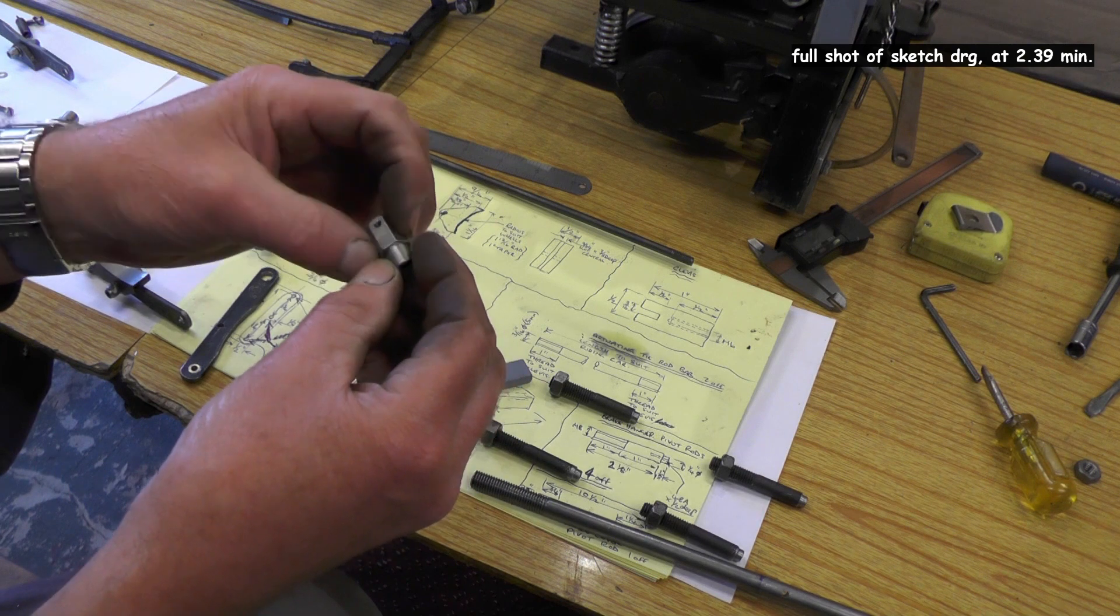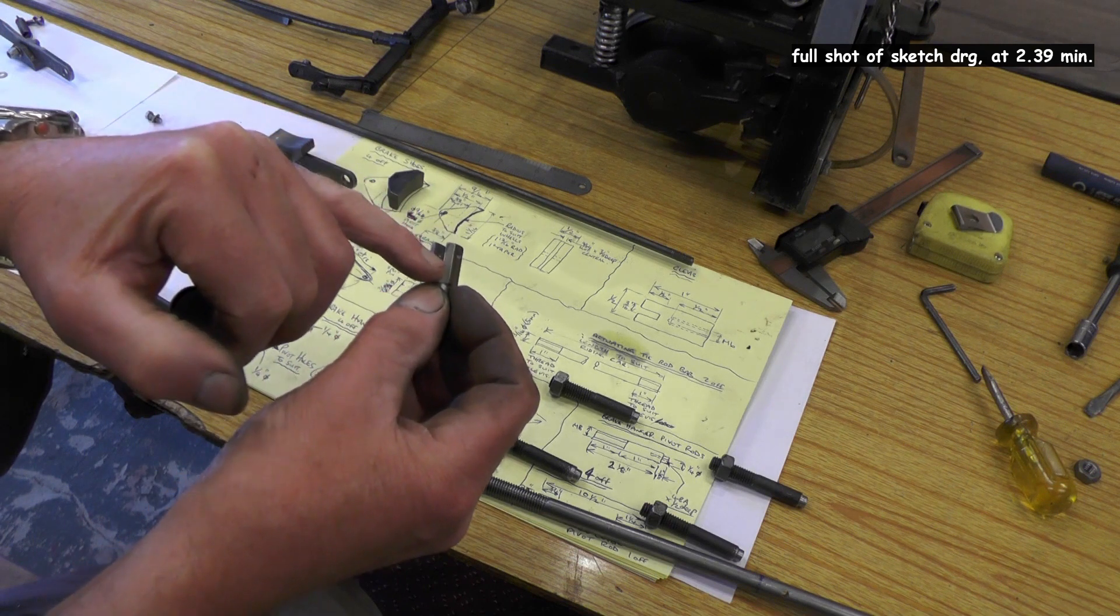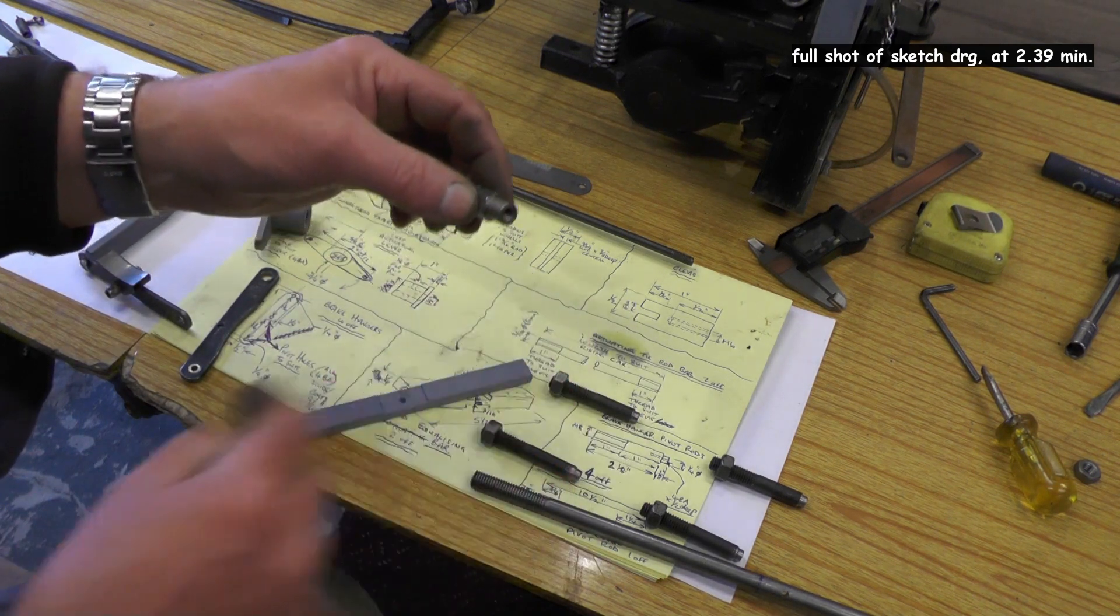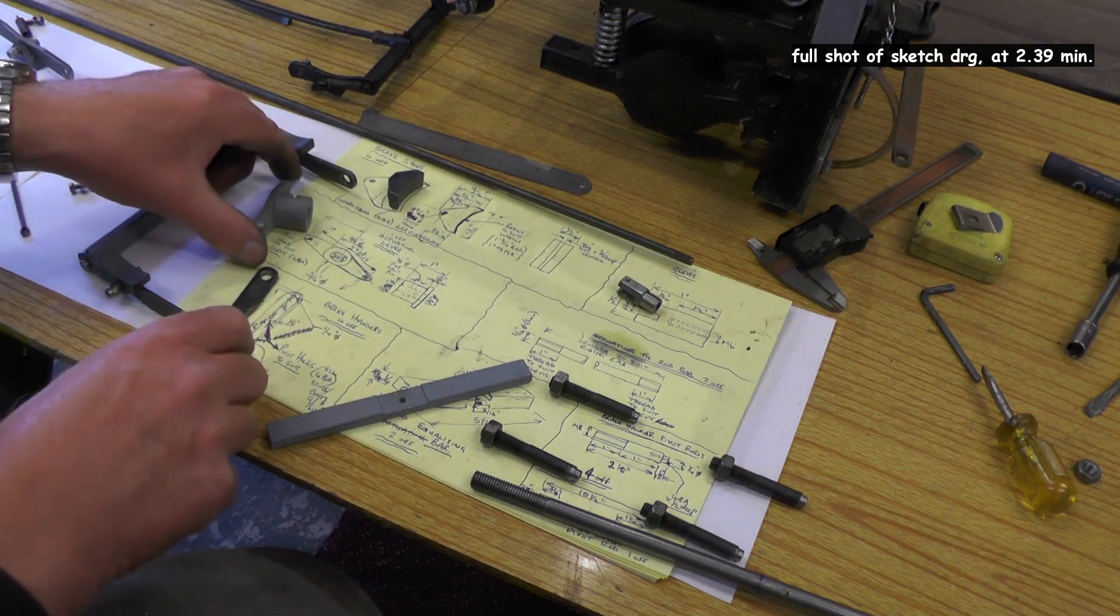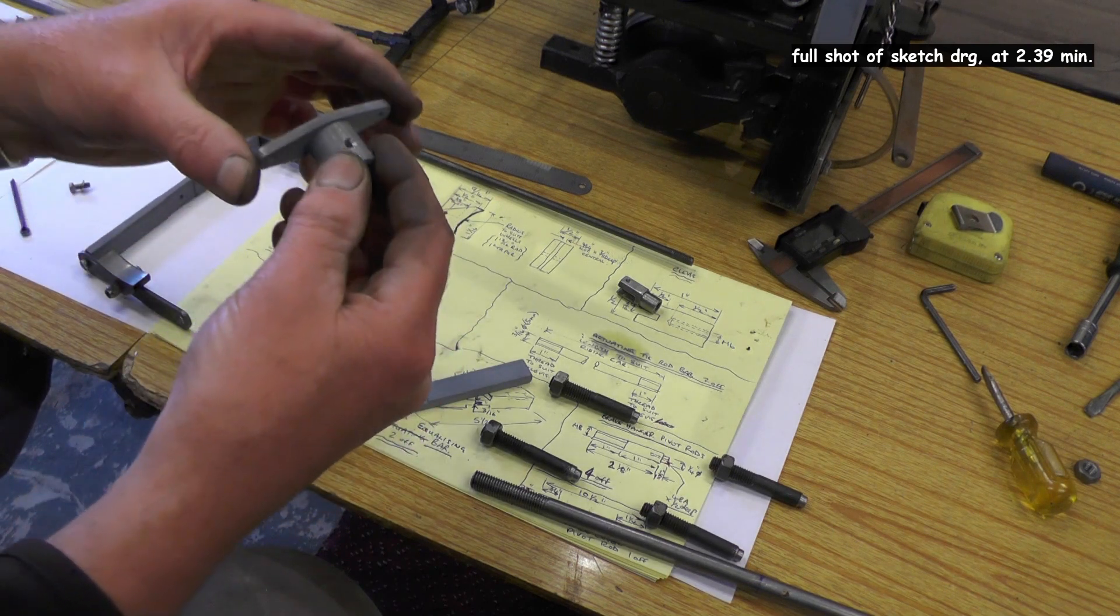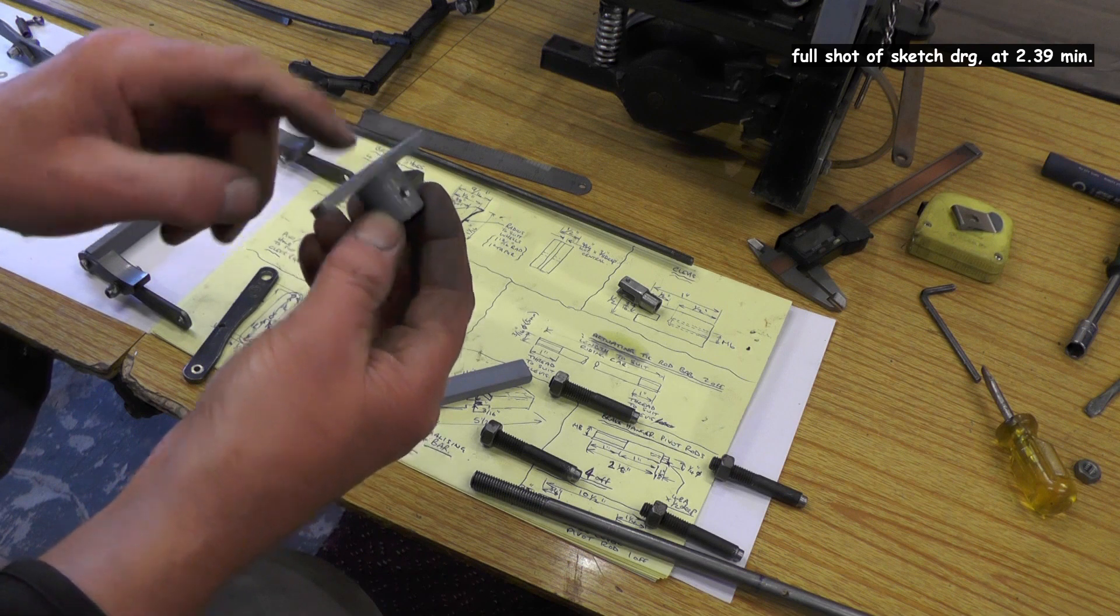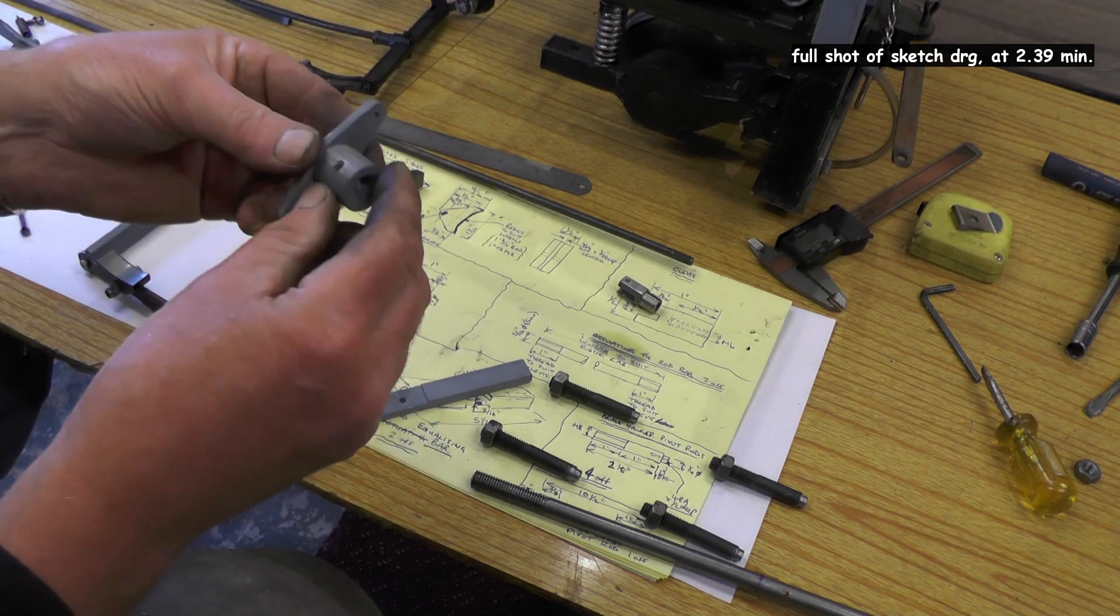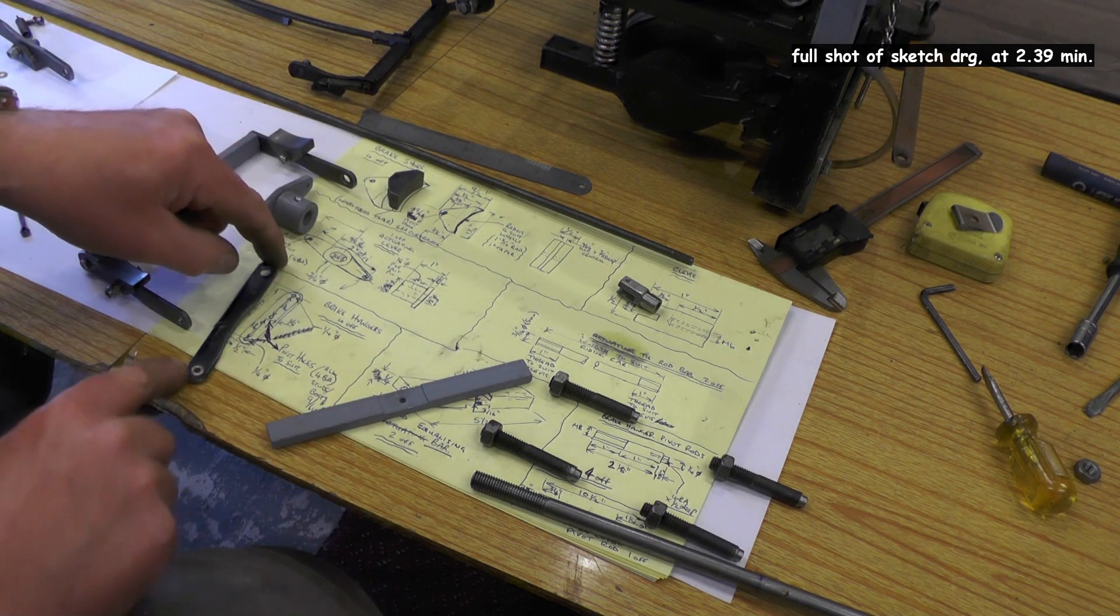I've got four clevises which I've made to that drawing. I've made them out of hexagonal because that's what I had in stock. They don't have to be hexagonal. There's a slot in and then a tapped hole M6 for the tie bar to fit into. Four of those. Then I've got this actuating lever boss which I've fabricated. I've welded the arm onto this boss to that drawing there.